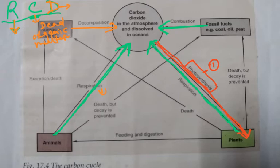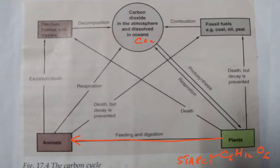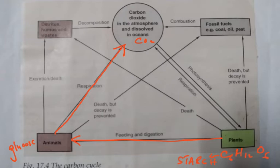The three processes which return CO2 to the atmosphere are: one — respiration by animals and plants; two — combustion; and three — decomposition. The CO2 in the air is converted into C6H12O6, the glucose molecule. That same glucose, probably stored in plants as starch — like rice, wheat, roti, bread — is converted in animals back to glucose through feeding and digestion. The glucose is then respired and carbon dioxide is returned to the atmosphere, and energy is released.